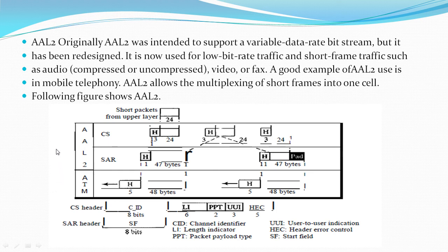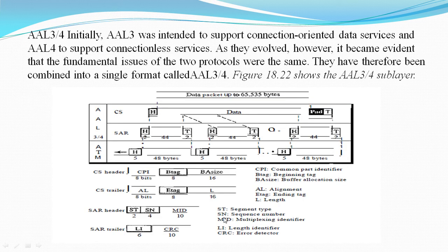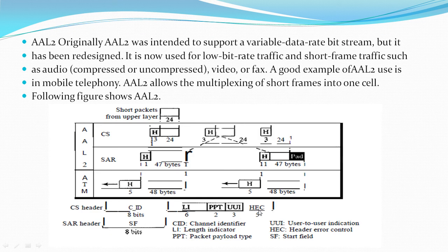AAL 2 Channel Identifier: the 8-bit Channel Identifier field defines the channel of the short packet. Length Indicator: the 6-bit Length Indicator field indicates how much of the final packet is in the data. Packet Payload Type: the field defines the type of packet. User to User Indicator: it defines that the UI field can be used by end-to-end users. Header Error Control: the last 5 bits are used to correct errors in the header.